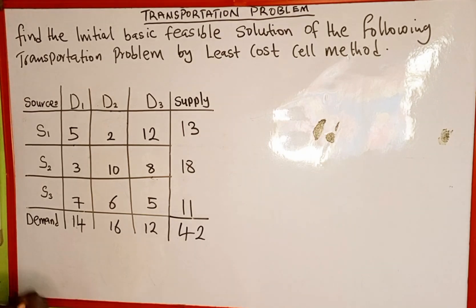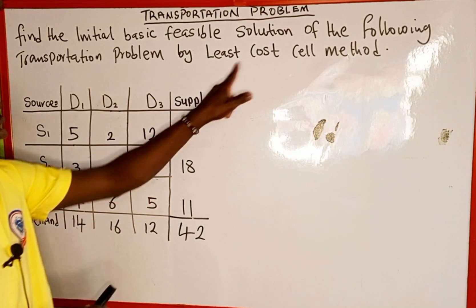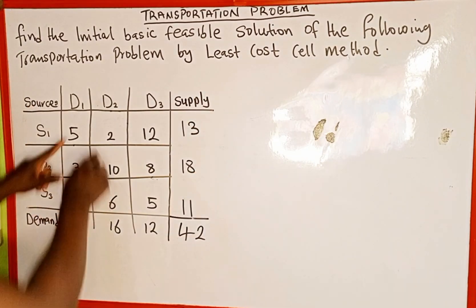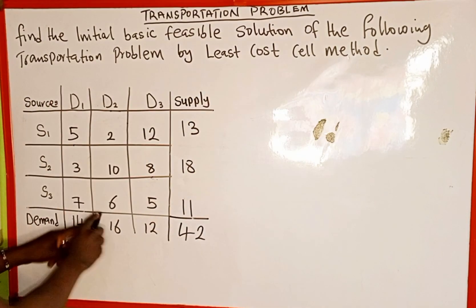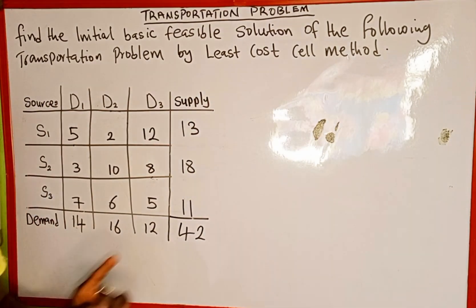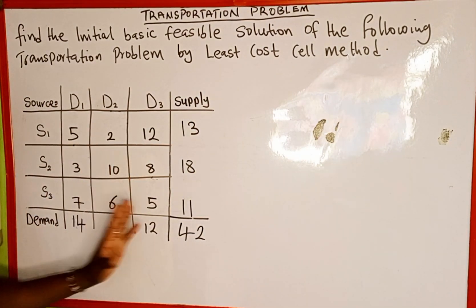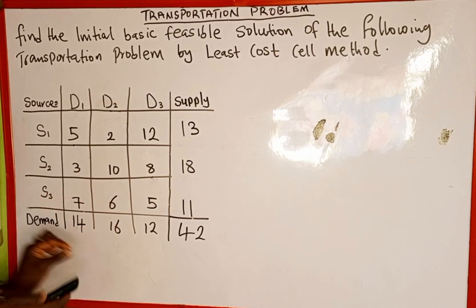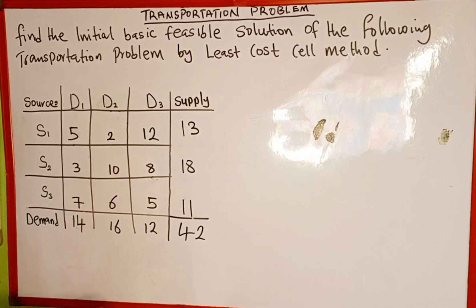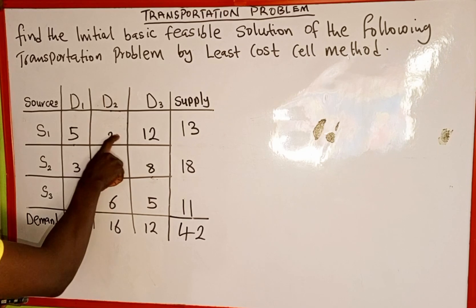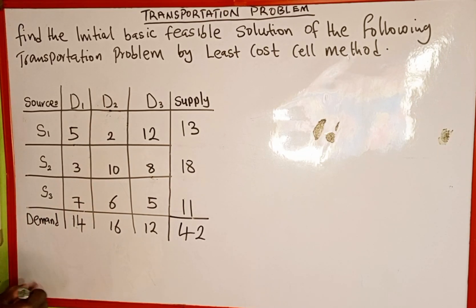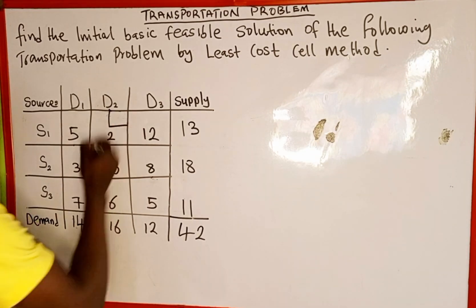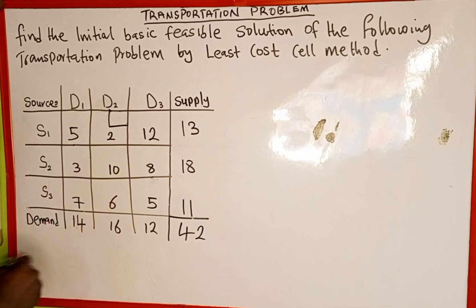As the name implies, the least-cost cell method means we first allocate to the cell with the least value. Looking at the table, the least value — the smallest number in any cell — is 2. So our first allocation is going to be on the cell with value 2.